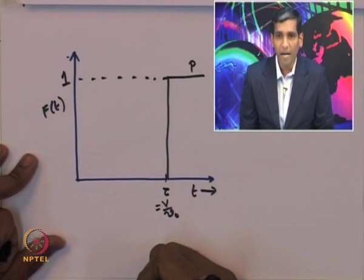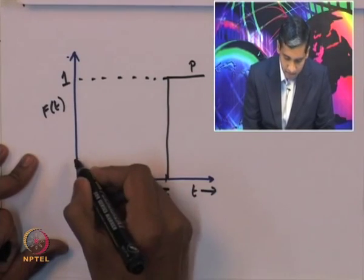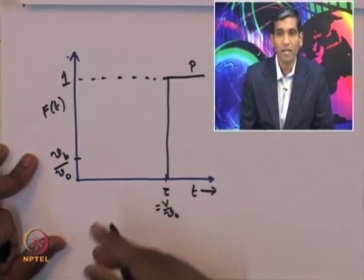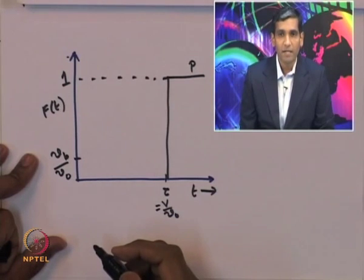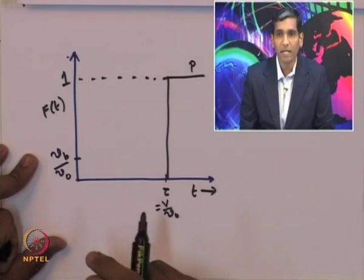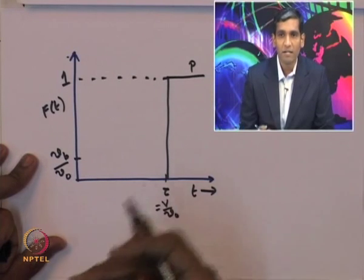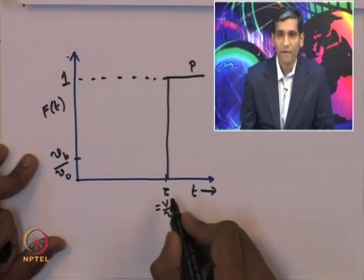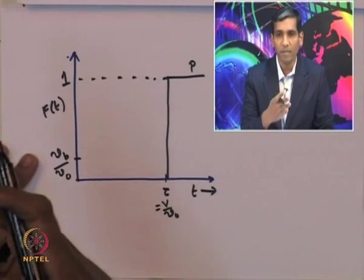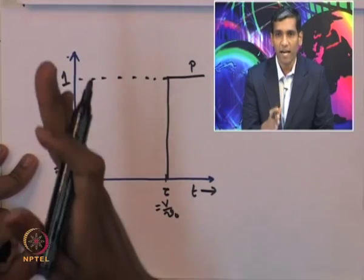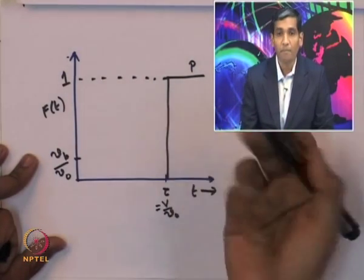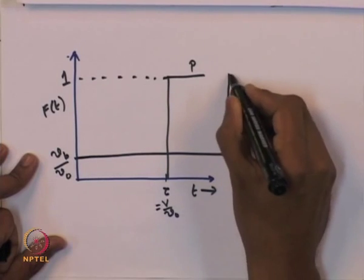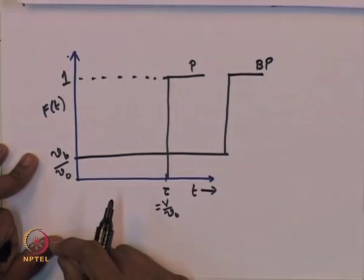Now suppose if there is a bypass in the reactor, then there will be a jump in the F curve. The jump will start at V_B divided by V_0, which tells you the extent of bypass present in the reactor. Because the space time is now larger than the space time of the reactor under perfect operation or if there was no bypass, the fluid stream entering the reactor will take longer to leave the reactor compared with perfect operation. So the F curve will essentially look shifted for a bypass operation.